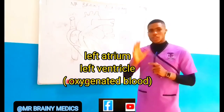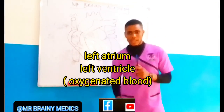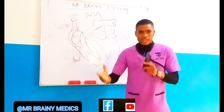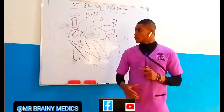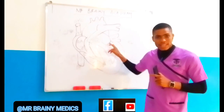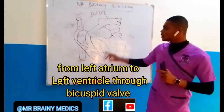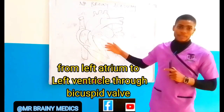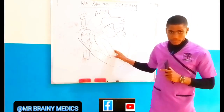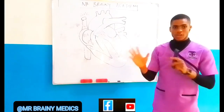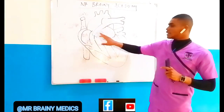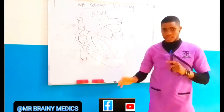Mr. Left carries oxygenated blood. The reason I'm using Mr. Right and Mr. Left is because there is a part of your brain called the hippocampus — it learns through experience. So the oxygenated blood flows into the left atrium. From the left atrium, it goes through a valve called the bicuspid valve into the left ventricle. From the left ventricle, it enters into the aortic valve, which carries it to the aorta — the largest artery in the body — where it spreads to the body.